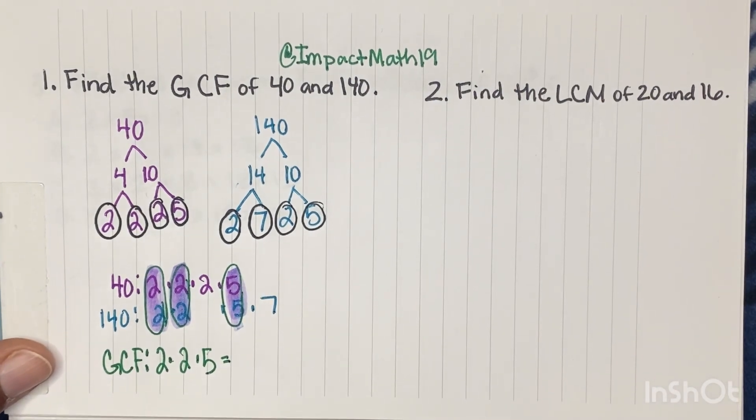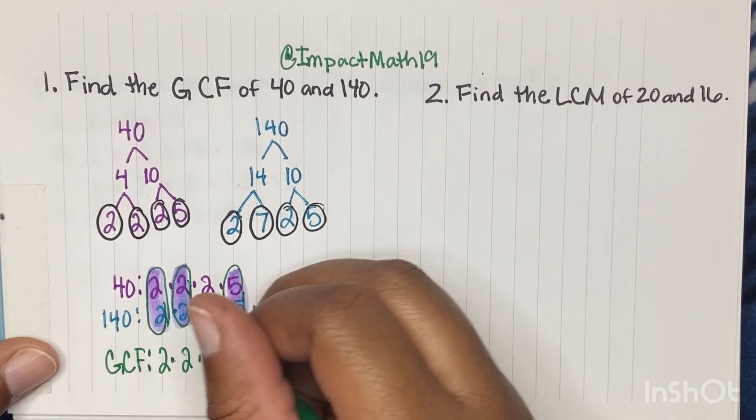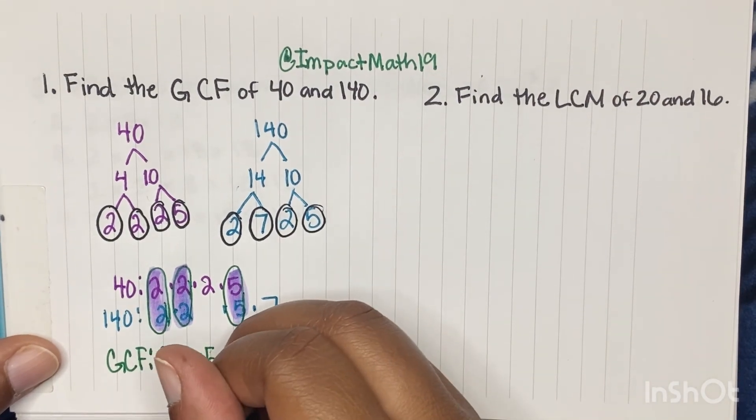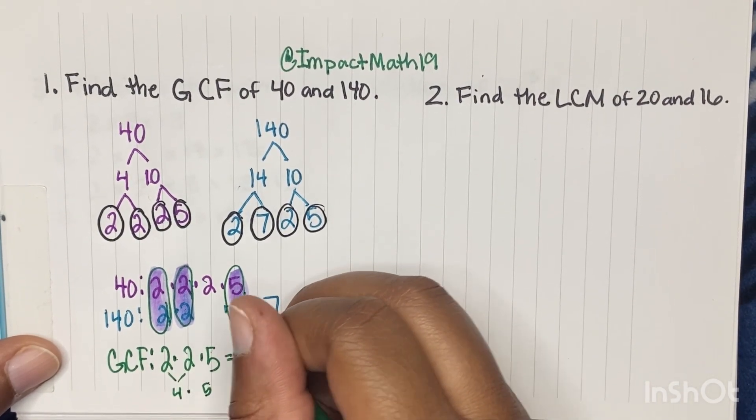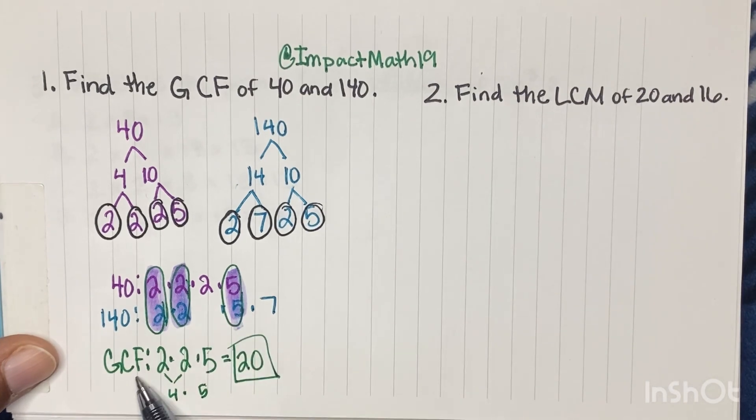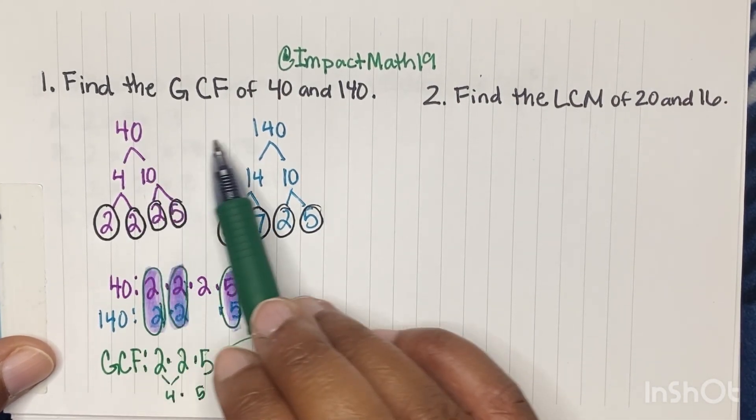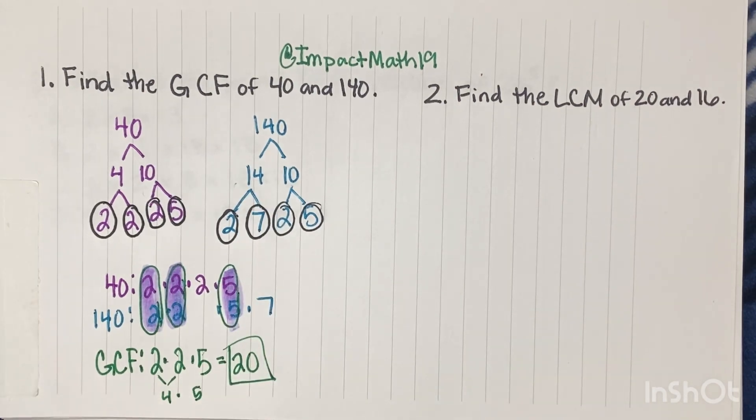So if we multiply that out, 2 times 2 gets us 4, and then 4 times 5 gets us 20. So our greatest common factor is 20. That's the greatest number that can go into both of these.